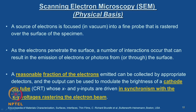To summarize: a source of electrons is focused in vacuum into a fine probe that is rastered over the surface of the specimen. As the electrons penetrate the surface, a number of interactions occur that result in the emission of electrons or photons from the surface. A reasonable fraction of the emitted electrons is collected by appropriate detectors, and the output is used to modulate the brightness of a cathode ray tube whose X and Y inputs are driven in synchrony with the X-Y voltage rastering the electron beam.